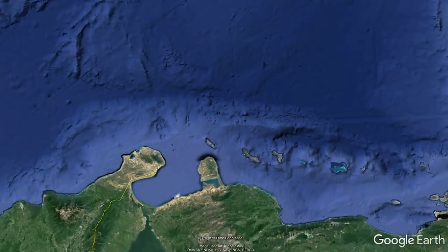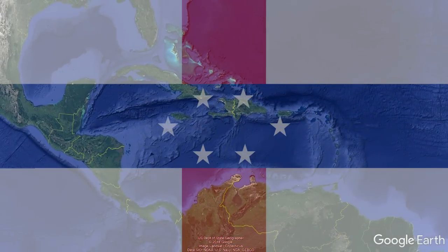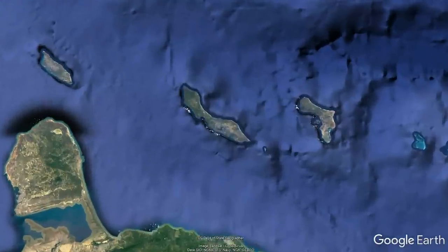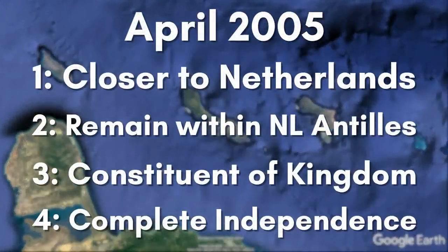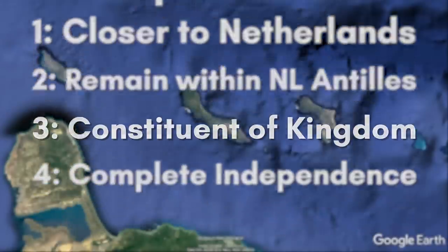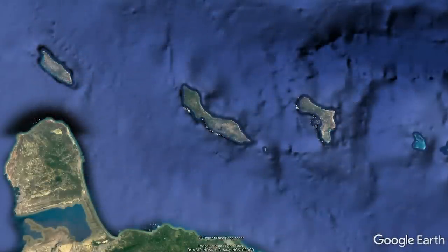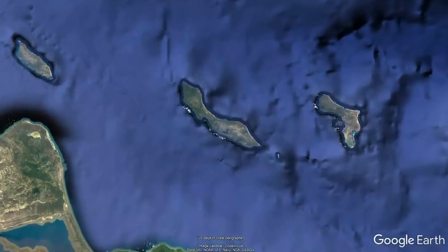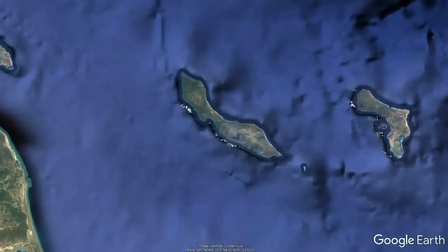As Curaçao was a major supplier of oil to the Allies in the Second World War, it was attacked by German forces in 1942 in what is now known as the Bombardment of Curaçao. The Germans were unsuccessful, failing to destroy or ignite the petroleum. The island was made the seat of government of the Netherlands Antilles in 1954. Curaçao held a referendum in April 2005, voting in favor of becoming an autonomous constituent country within the Kingdom of the Netherlands — a status realized when the Netherlands Antilles was dissolved in 2010.